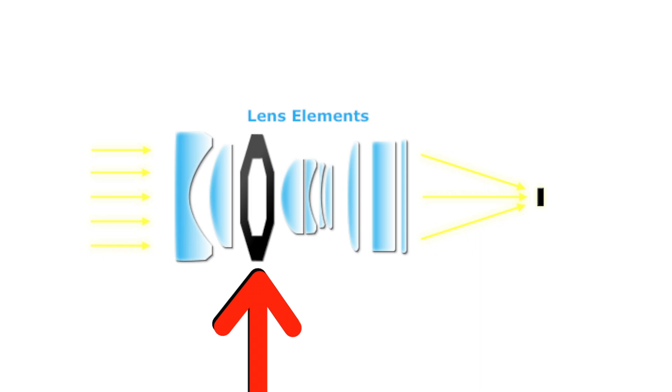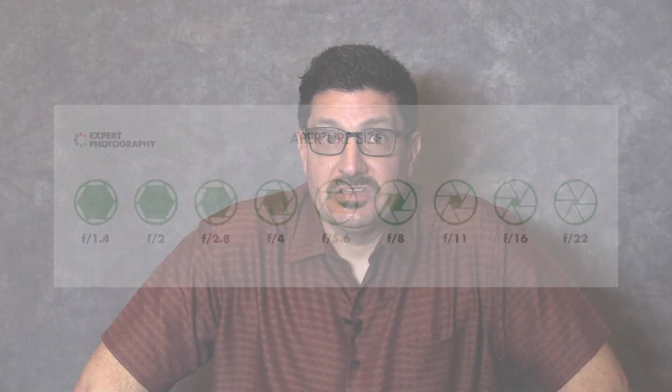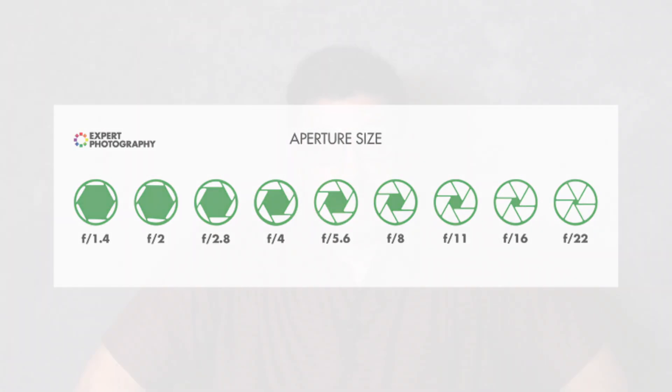Shutter speed is the most obvious contributing factor to an exposure. It has one of the biggest effects on your photos and your videos as well. With a poor knowledge of how to use the correct shutter speed, you'll end up with blurred results. The term shutter comes from still photography where it describes a mechanical door between the camera lens and the film. When a photo was taken, the door opens for an instant and the film is exposed to the incoming light.